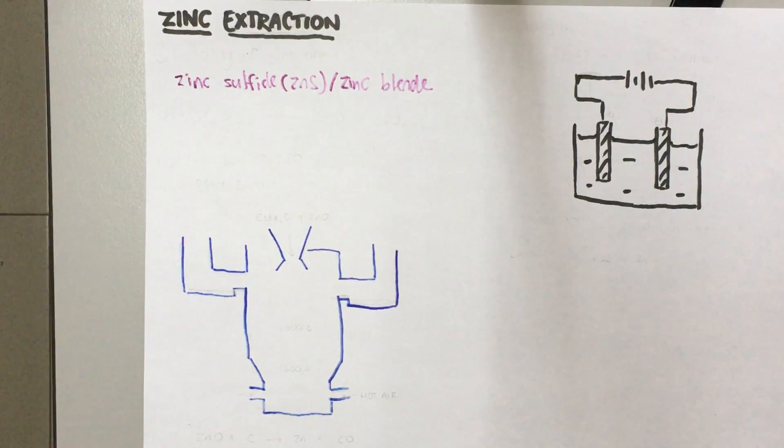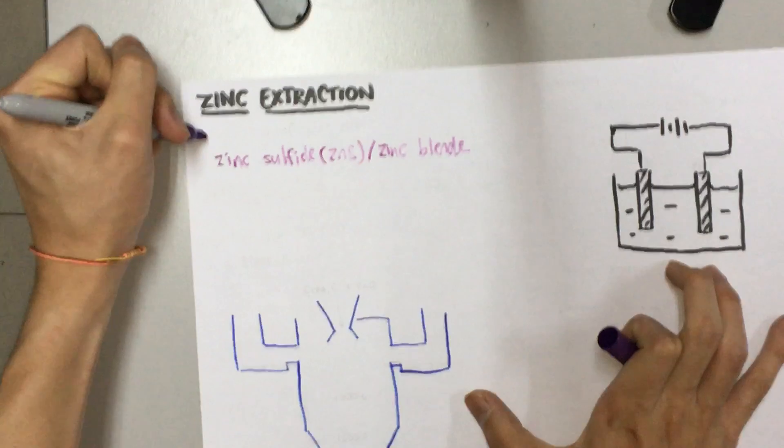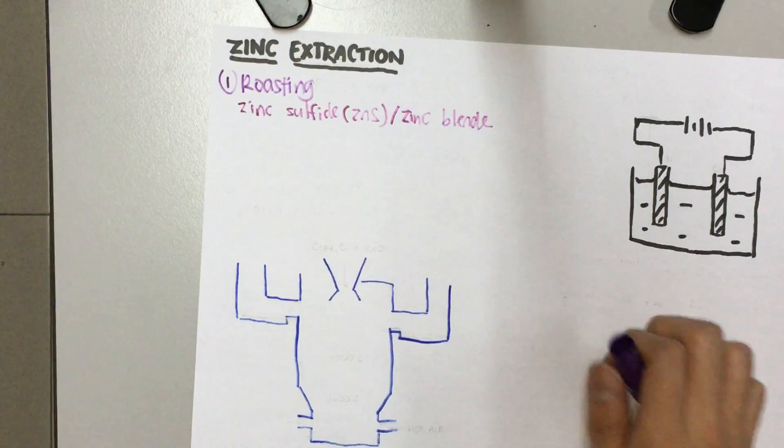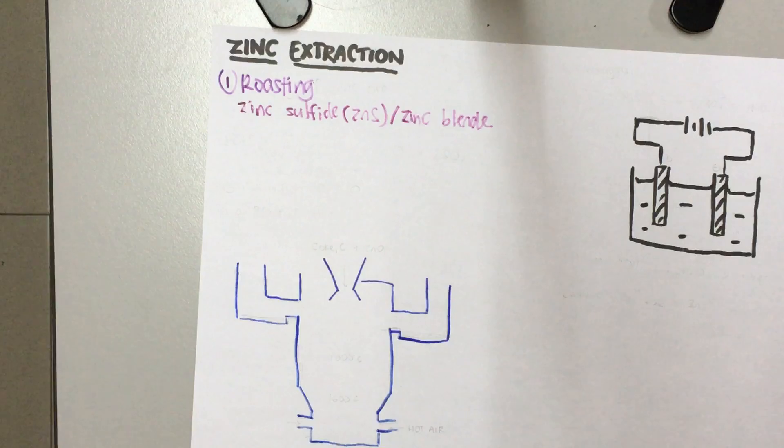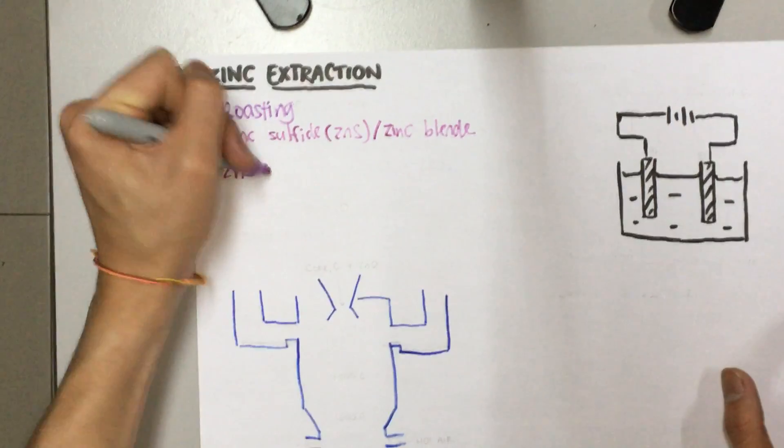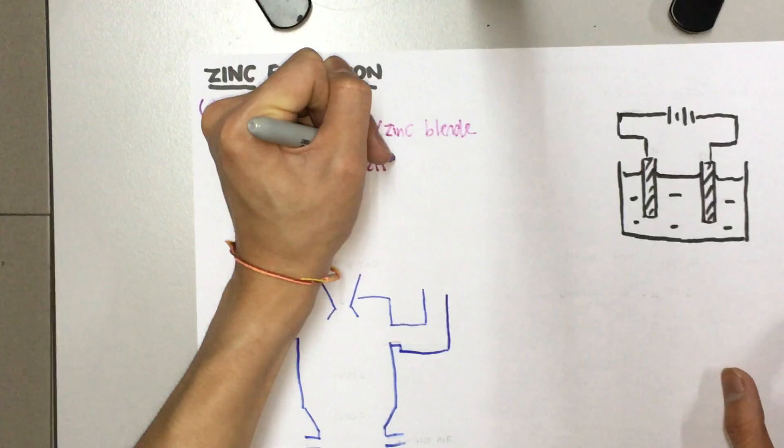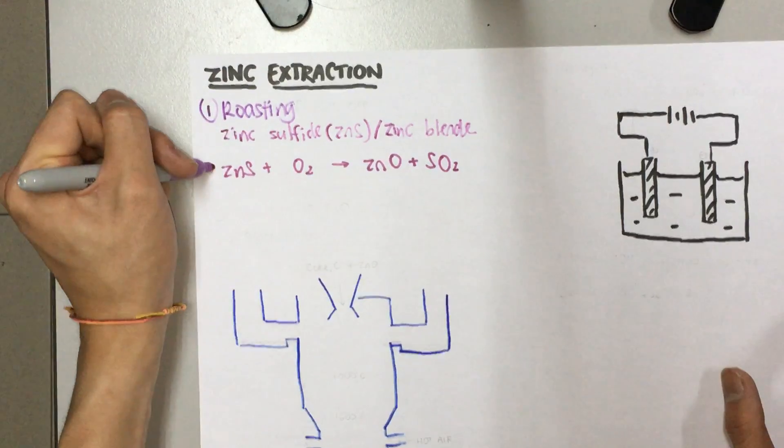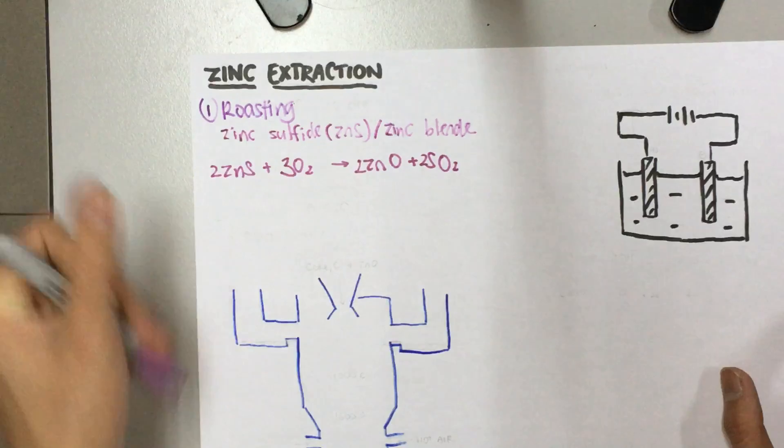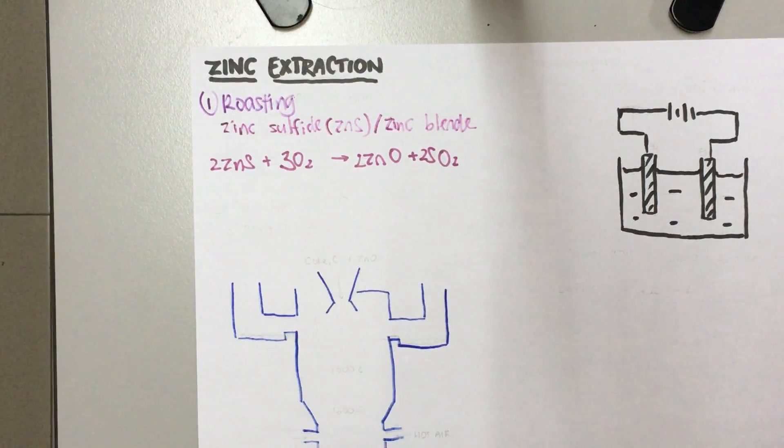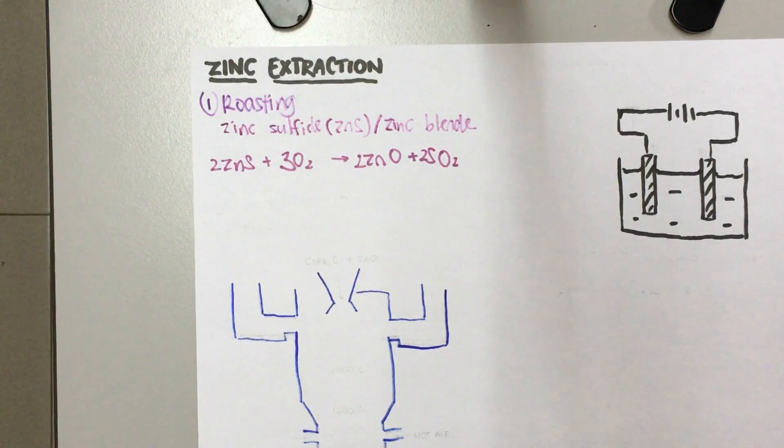The first step in the extraction process is actually roasting it. What I mean by roasting is, I'm going to heat it in air, very hot air. So the zinc sulfide is going to react with oxygen to form zinc oxide and sulfur dioxide. To balance the equation, we put 2. The sulfur dioxide produced can be used for the contact process to produce sulfuric acid, but our main focus is actually on the zinc oxide.